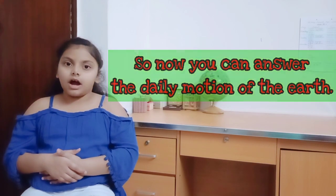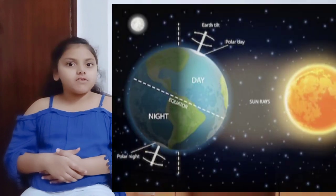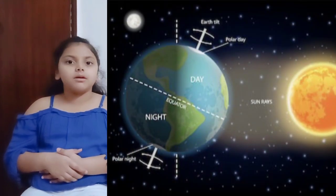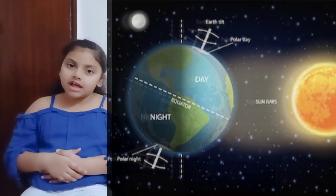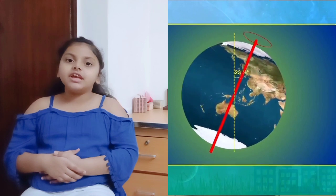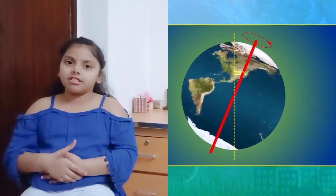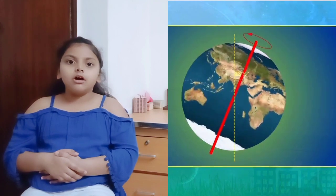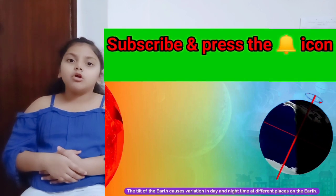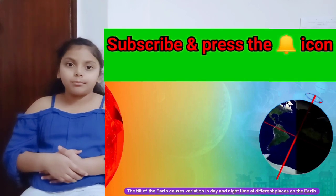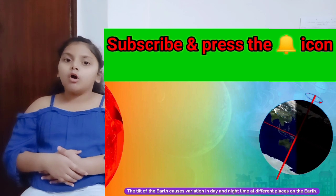This movement of the earth is also called the daily motion of the earth. The half of the earth which faces the sun has day, and the remaining half which does not face the sun has night. The earth while rotating is tilted on its axis by 23.5 degrees from a straight line running across the center of the earth. The tilt of the earth causes variation in day and night time at different places on the earth.